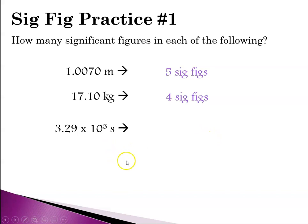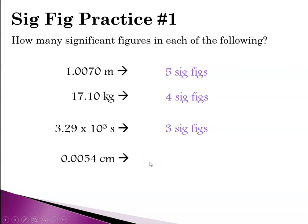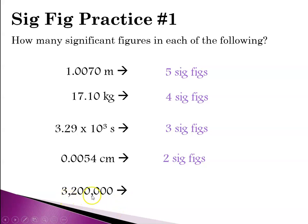3.29 times 10 to the 3 — we haven't really talked about scientific notation yet. However, in scientific notation, this part of the number, not the exponent, tells you the number of sig figs, so 3 for this one. And in 0.00890, we have leading zeros which are never significant, so this number only has 2 sig figs. For 3,200,000, there is no decimal point, so the trailing zeros are not significant — 2 sig figs.